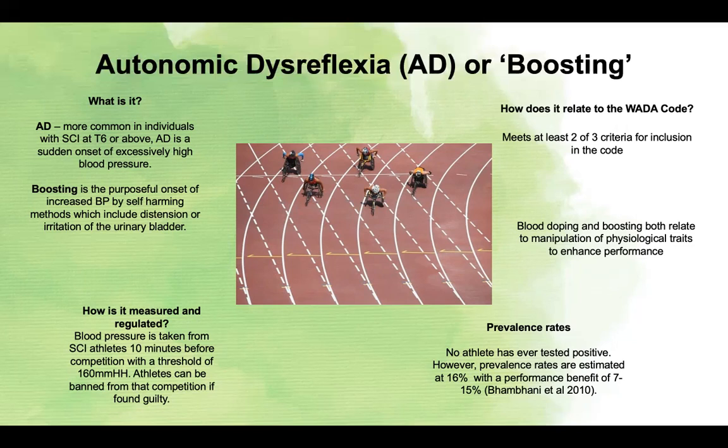Prevalence rates are estimated at 16%, with a performance benefit between 7 and 15%. How does this relate to the WADA code? Like IM, it meets two of the three criteria for inclusion within the code. Additionally, boosting and blood doping are both relatable, as they both involve manipulating biological traits to enhance performance, and blood doping is already a banned method in the code.